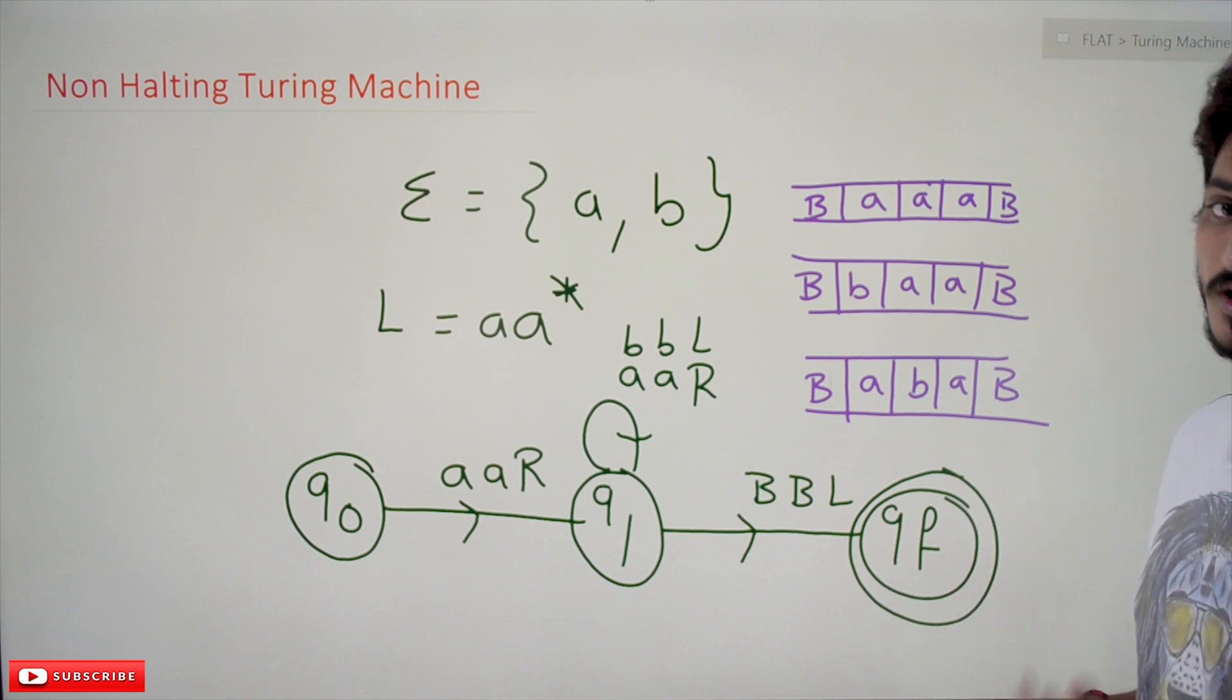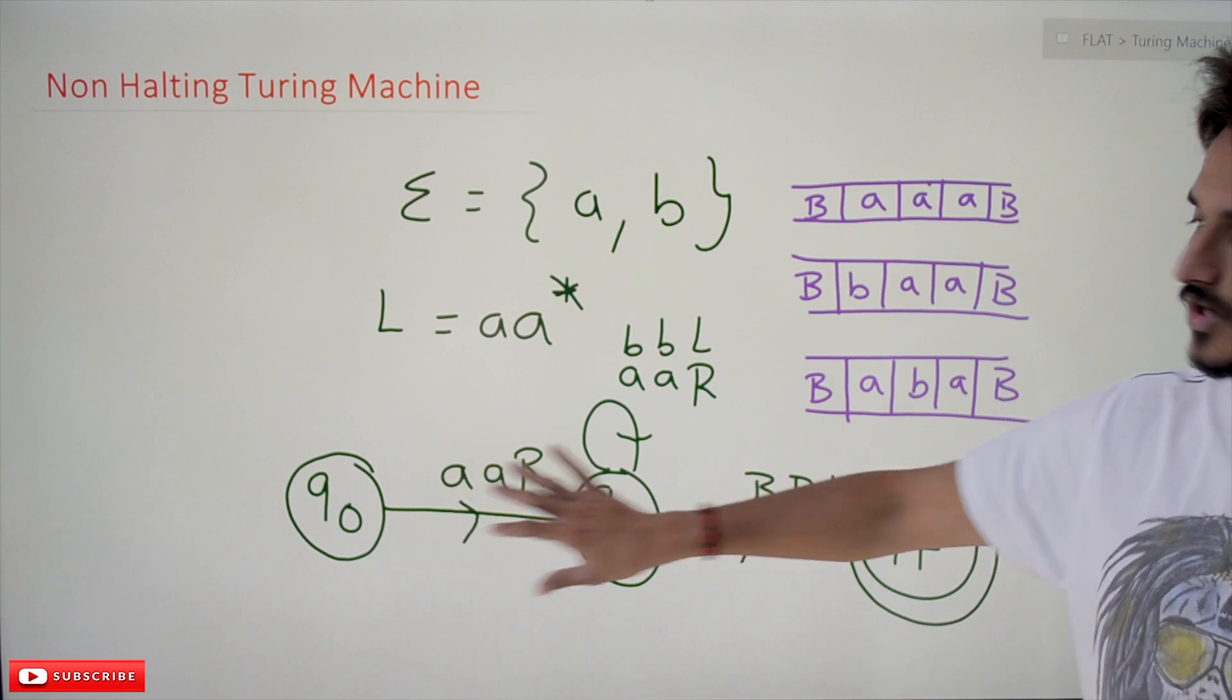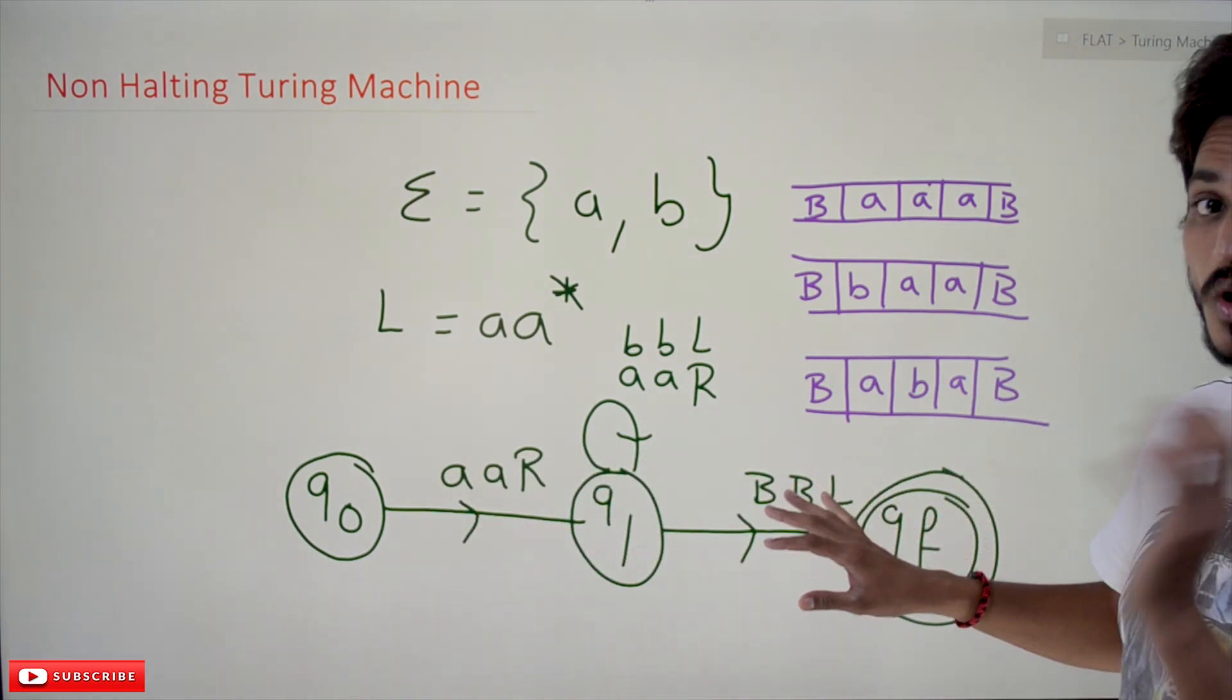Suppose if you write a logic like this, if you define a Turing Machine, if you construct a Turing machine like this, let's see what happened.